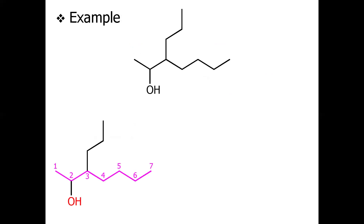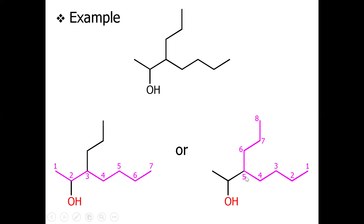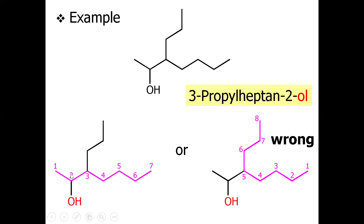Here are more naming examples. First, select the longest chain to which the alcohol group is attached, and number the chain giving lowest priority to the OH group. For a seven-carbon chain with OH, we number from the end nearest the OH: one, two, three, four, five, six, seven. Numbering from the other end would be wrong because the OH group would receive a higher number. With a propyl group at carbon three and OH at carbon two, the correct IUPAC name is 3-propylheptan-2-ol.